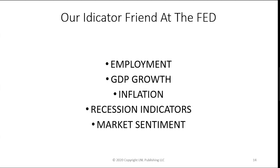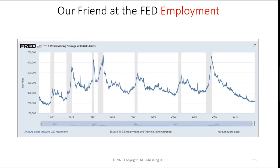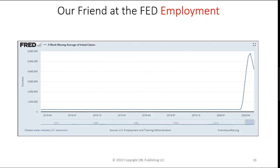The best fundamental indicators I've found are at the Federal Reserve. They have great information on employment, GDP growth, and inflation. They have indicators that tell you when a recession is starting and when it's ending, and recently they've added market sentiment. Looking at the employment data from the Federal Reserve Bank of St. Louis — on this longer term chart, you can see that when employment starts to turn up, we usually enter recessions. The gray lines indicate when recessions start and end. When unemployment starts to come down and people get back to work, recessions are over.